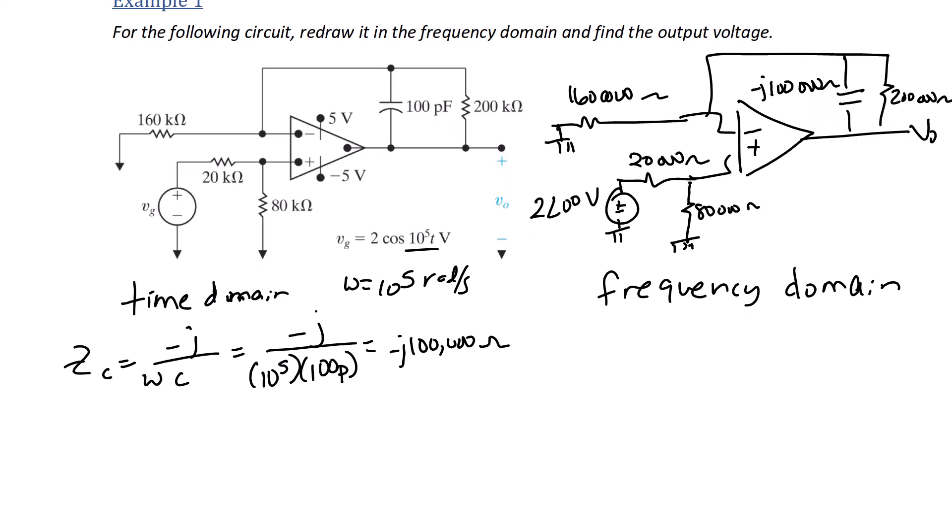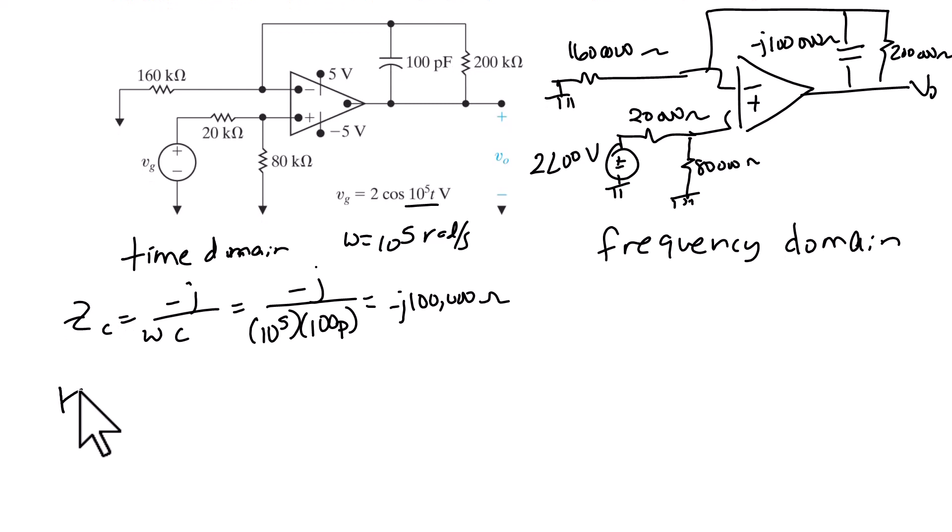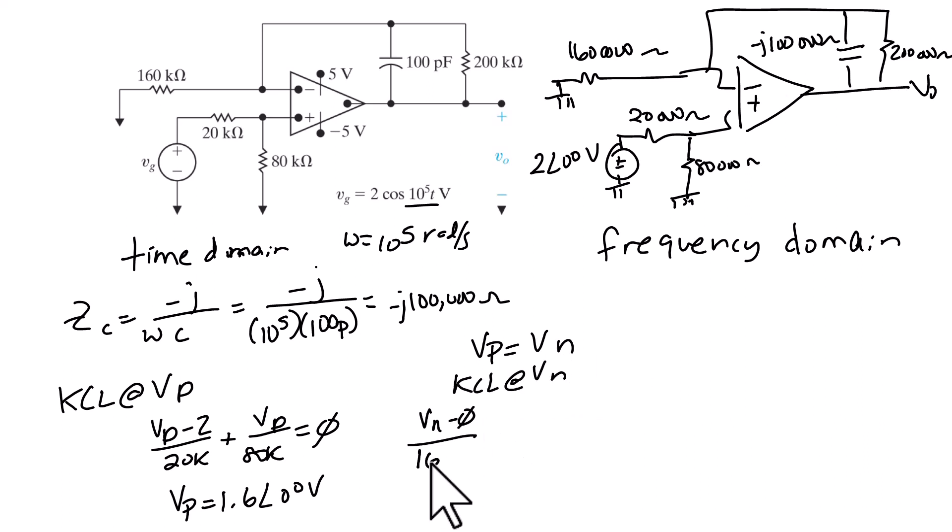So next we're going to write a KCL equation at the positive terminal. So we have VP minus 2 over 20k plus VP over 80k, which equals VP is 1.6 volts. And since VP equals V negative, and we have that at the KCL at the negative terminal is VN minus 0 over 160k plus VN minus V0 over 200k plus VN minus V0 over negative j 100k. So when we solve for V0, we get that V0 is equal to 2.15 with an angle of negative 21.8 degrees. When we convert it back to the time domain, we get 2.15 cosine 10 to the 5t minus 21.8 degrees, and the units are volts.